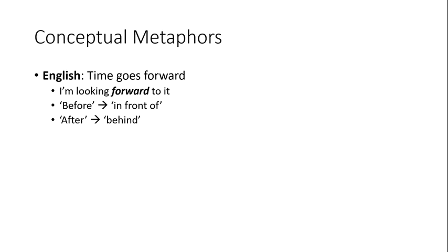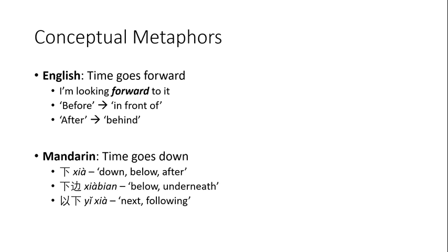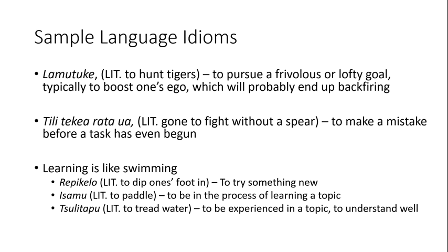But it doesn't have to be this way. In Mandarin, for example, time is perceived as going down, so the word xia means both below and afterward. How your culture conceptualizes things like this can have a heavy impact on how words are created and grammaticalized, and it will help make your conlang a lot more distinct from your native language.